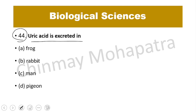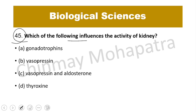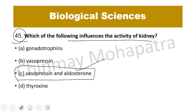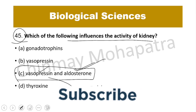Question number 44: Uric acid is excreted by birds because uric acid is the most important part of their urinary excretion. Question number 45: Which hormones influence the activity of the kidney? Kidney activity is influenced by vasopressin (ADH — antidiuretic hormone) and aldosterone. Both ADH and aldosterone are the hormones that regulate kidney activity.